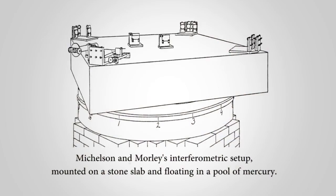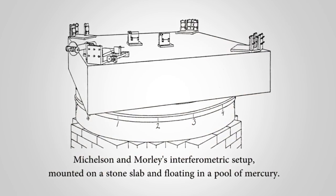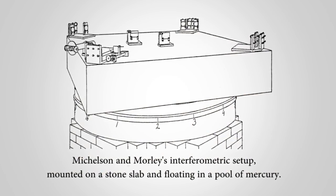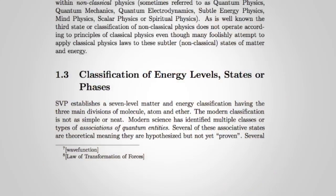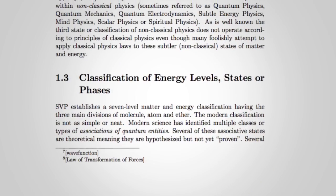First we've got to define ether. And the Michelson-Morley experiment did not disprove ether — it just disproved they couldn't measure it with that instrument. So ether is all the subatomic stuff that exists; it's a catch-all term for all the subatomic everything.